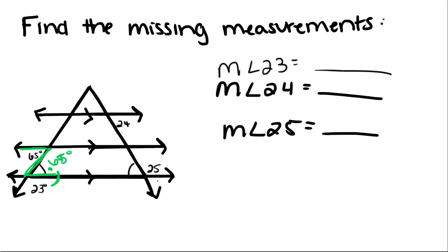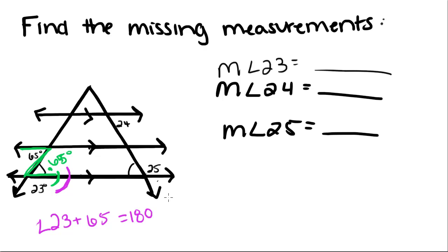Now that I know what that angle equals, I can use my knowledge of supplementary angles: angle 23 plus 65 equals 180. If I subtract the 65 over, I get angle 23 equals 115 degrees.